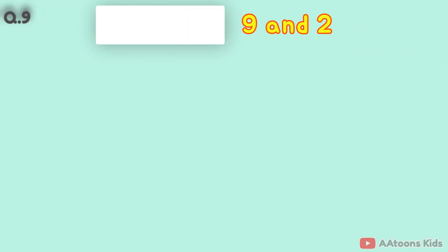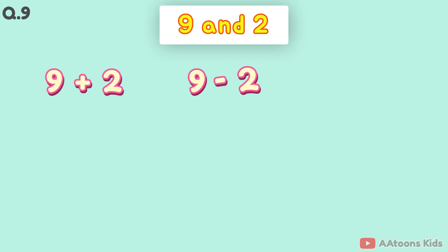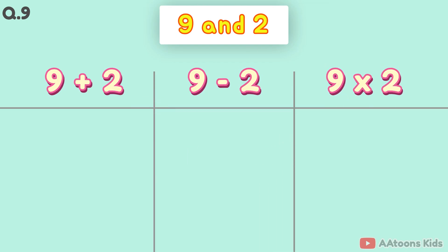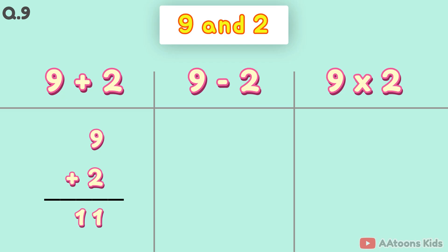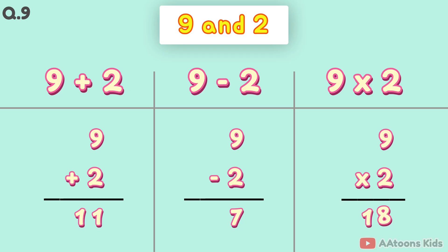The two numbers are 9 and 2. 9 plus 2 is 11. 9 minus 2 is 7. 9 times 2 is 18.